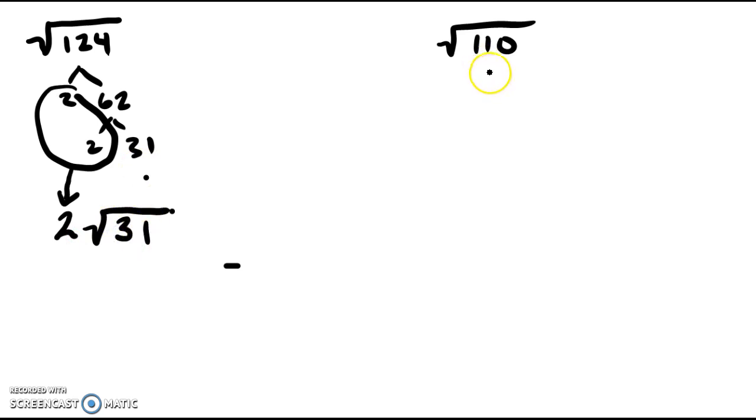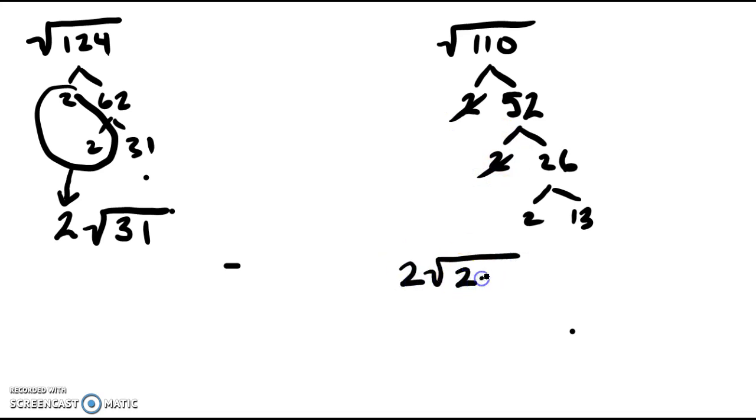For 110, if you don't know if you can simplify it, we've got 2 and 52. Another even, so 2, 26, 2, 13. Take 2 of the same number, take it out and make it 1 of that number. We're going to have to keep the 2 and this other 2 and the 13 inside. It doesn't matter which 2's you choose, just 2 of the same number, take it out and make it 1. 2 times 13 is 26, so the answer is 2 square root of 26.